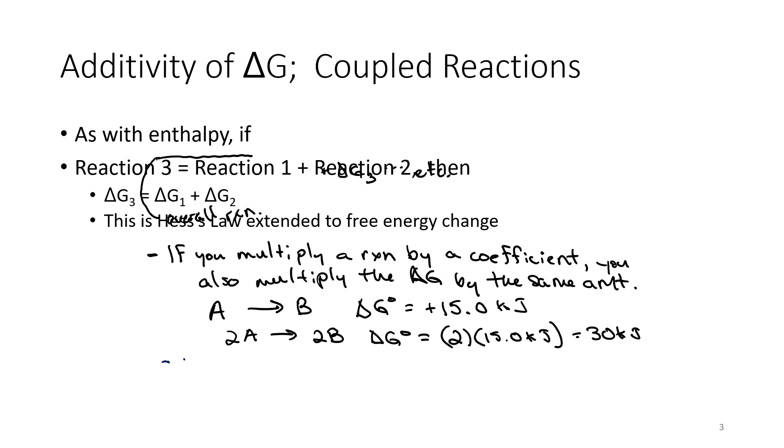Lastly, if you reverse a reaction, the sign of delta G will be the opposite. All we're going to do is switch the sign. So again, A to B and we have that delta G is equal to 15 kilojoules. Then B to A, our delta G is equal to negative 15 kilojoules. And this goes back into when we talked about the fact that if a reaction as written is non-spontaneous, the reverse reaction is spontaneous.